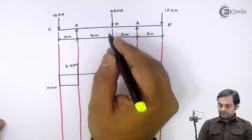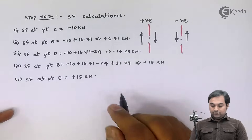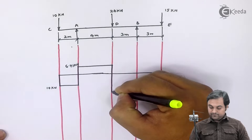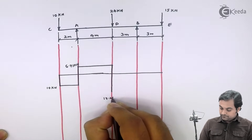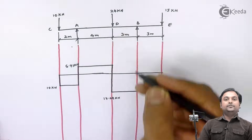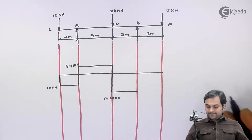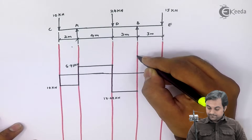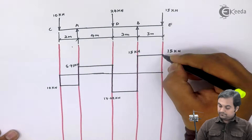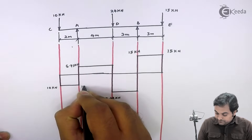This will be constant between A to D since there is no load between A to D. At point D the shear force is minus 17.29, so from positive it again goes back to negative 17.29. This remains constant between D to B. At point B the shear force is plus 15, so from negative it goes into positive, having value 15 kN.